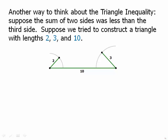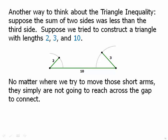Because no matter how we move that side of a 2 and a side of a 3, we can rotate it all we want. They're not going to touch. No matter where we move those short arms, they are simply not going to reach across that gap to connect. So we're not actually going to be able to join it up and close off the shape as a triangle.